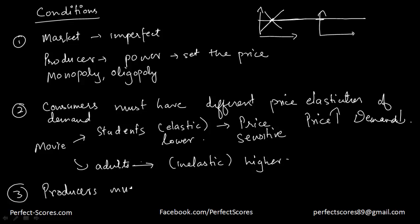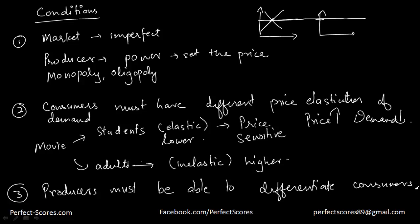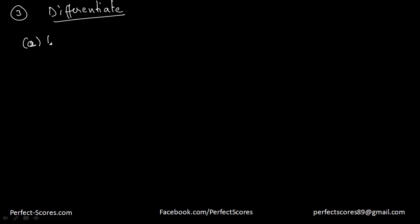Producers must be able to differentiate consumers, because if they are not able to differentiate, they will not be able to charge different prices. For example, consumers can be classified as students or adults. There are many different ways in which you can differentiate a consumer.